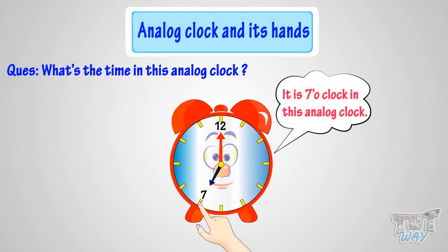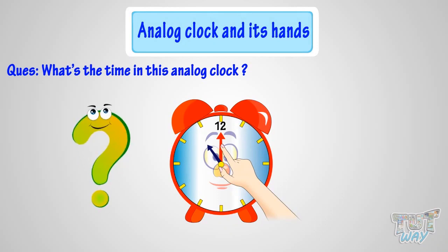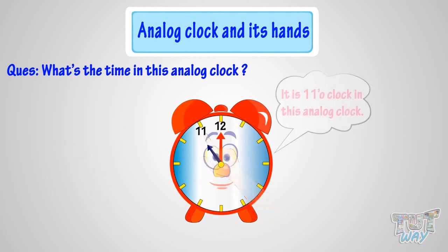Next example. Can you tell me what's the time in this analog clock? When the minute hand is at 12, it is time to the hour. But to which hour? The hour hand tells the hour. As the hour hand is pointing at 11, so it's 11 o'clock.